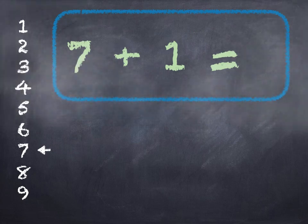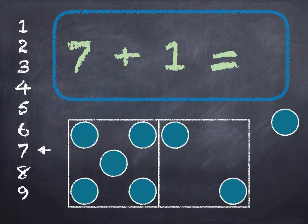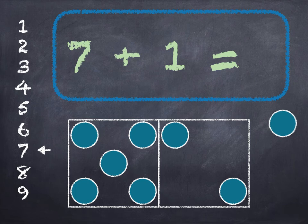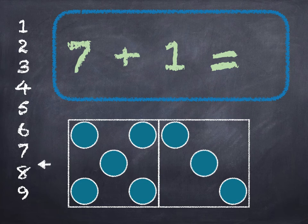7 plus 1. 7 in the box, add 1 on. 7, 8. Start at 7 on the number line and go down 1. We get to 8. 7 plus 1 is 8.